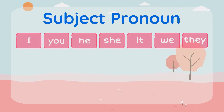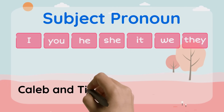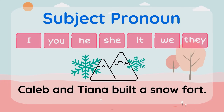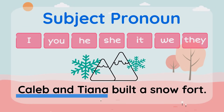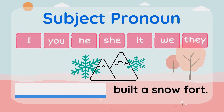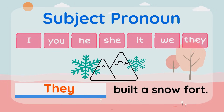What if there are multiple things or people, like in this sentence? Caleb and Tiana built a snow fort. What should we replace Caleb and Tiana with? There's more than one person as a subject, so it's they. Good job! They built a snow fort.